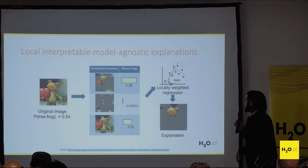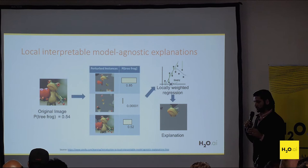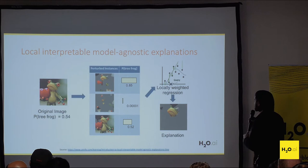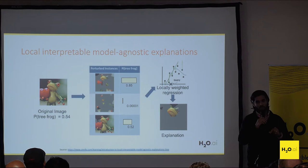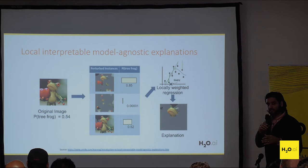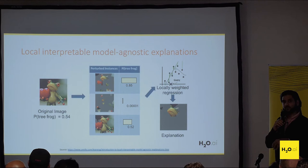The next technique is local interpretable model-agnostic explanations, otherwise known as LIME. The main idea behind LIME is to fit local linear models to a response function. We have some complex model — say we're trying to predict what an image is — and we fit tiny linear models to different parts of the response function to understand what's going on. You can do this across different types of rows and datasets. This is a relatively new technique, and we do a variant of it with our own MLI technique, which I'll explain later.